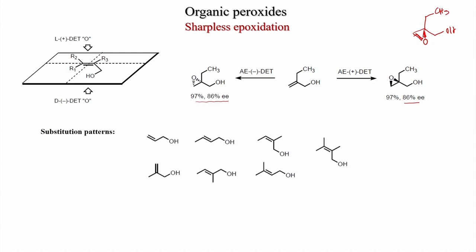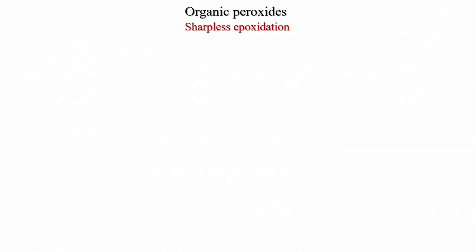Various substitution patterns exist: mono-substituted, disubstituted, trisubstituted, tetrasubstituted, and Z-disubstituted olefins. Z-disubstituted allylic alcohols are the least reactive and least selective. When a Z-disubstituted allylic alcohol is used, the reaction is very sluggish and less selective.